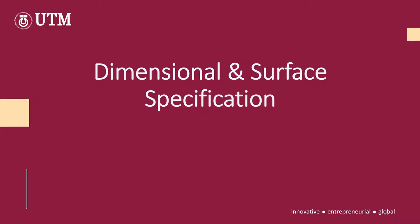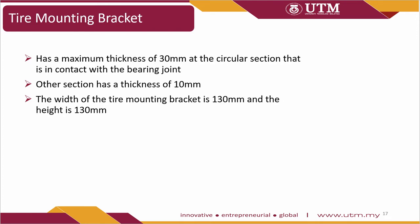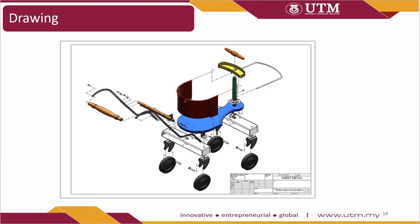For dimensional and surface specifications, strollers generally have a hollow frame shape. The right chassis size is selected based on baby height and weight. The ends of the chassis are equipped with threaded or non-threaded ends along with a small pulse to allow installation of the tire mounting bracket and other parts. Decorative sleeves sit on top of the chassis to add aesthetic value. The tire mounting bracket should have a maximum thickness of 30mm at the bearing joint contact surface, 10mm at other sections, with a width and height of 130mm each. This is the drawing of the baby stroller designed by our team.